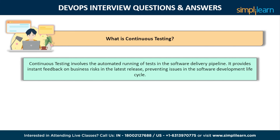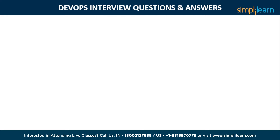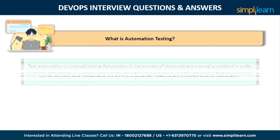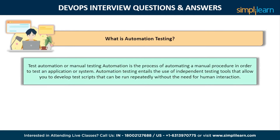Let's move to the next question: what is automation testing? Test automation is the process of automating a manual procedure in order to test an application or system. Automation testing entails the use of independent testing tools that allow you to develop test scripts which can be run repeatedly without the need for human interaction.